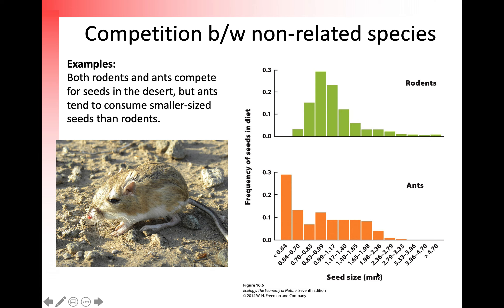One example of resource partitioning is what happens when non-related species compete for a resource like seeds. In deserts, rodents and ants both compete for seeds, but because ants generally consume smaller seeds, they are able to do resource partitioning and share with the rodents — the rodents feed primarily on larger seeds while ants feed primarily on the smaller seeds. That's resource partitioning.